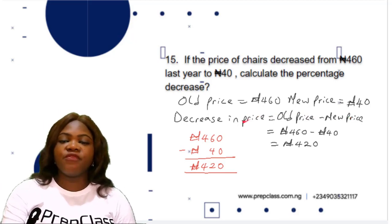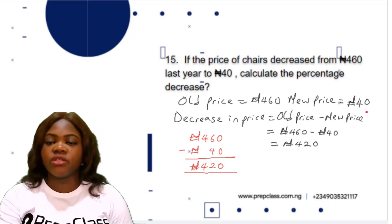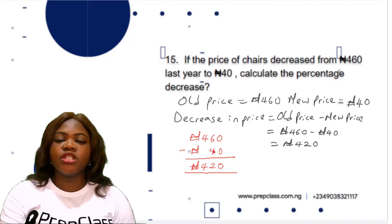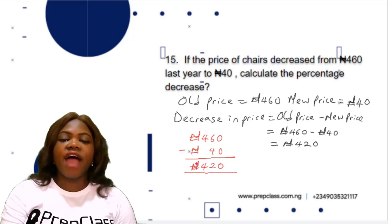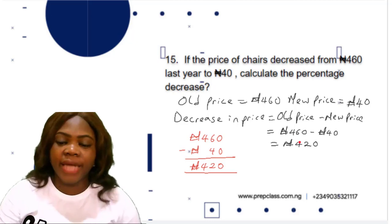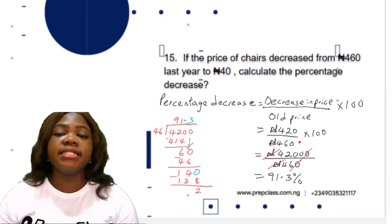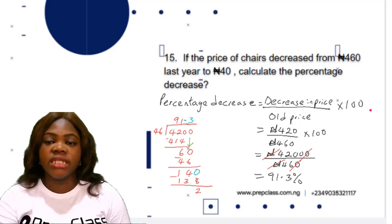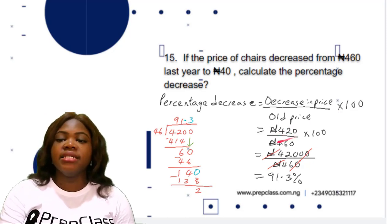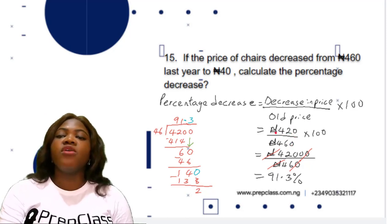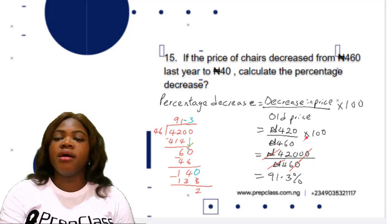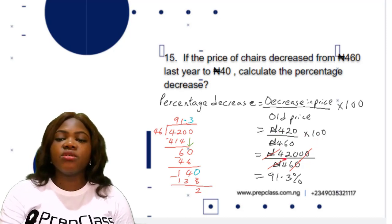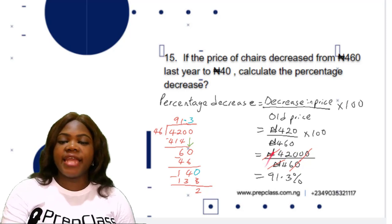The old price is 460 naira and the new price is 40 naira, so 460 minus 40 is 420 naira as the decrease in price. Now the percentage decrease formula is: decrease in price divided by old price, multiplied by 100. The decrease in price is 420 naira, the old price is 460 naira, so we have 420 divided by 460 multiplied by 100, which gives 42,000 divided by 460.